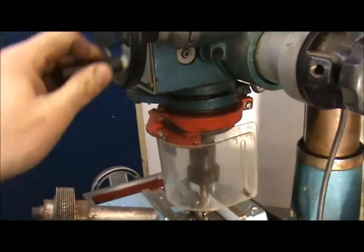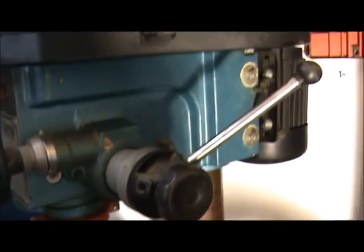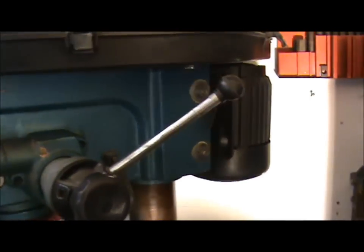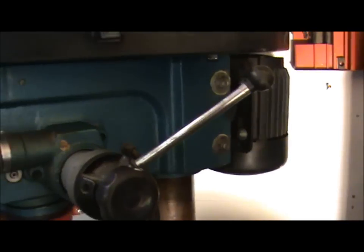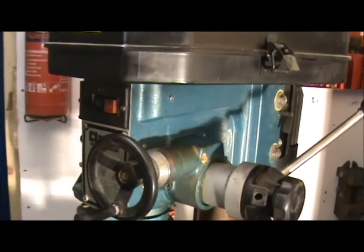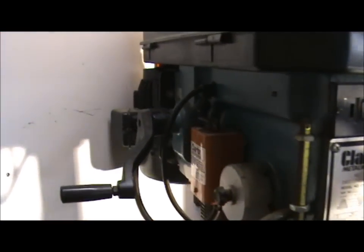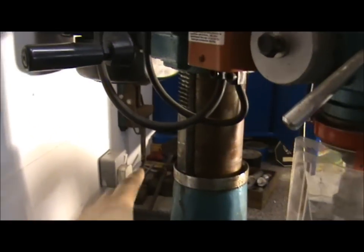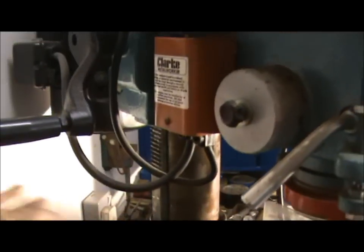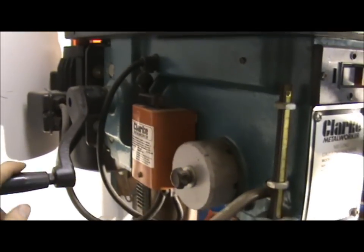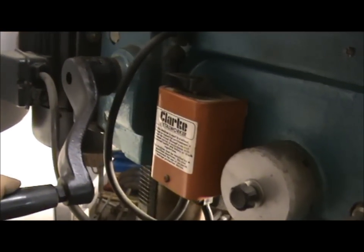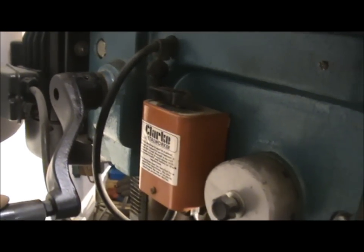And so to lower and raise the head you have to undo these two nuts here. Then on the other side of the mill there's your stop start button there. You've got a lever that engages like a rack pinion and you can see the rack there and this lever makes the head go up and down. That orange box there, that's your forward and reverse controls for your motor.